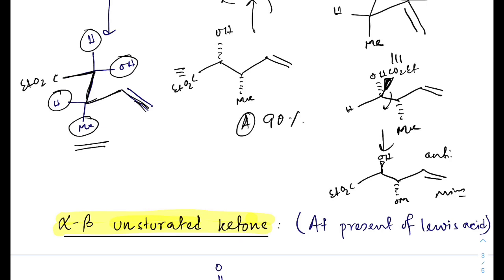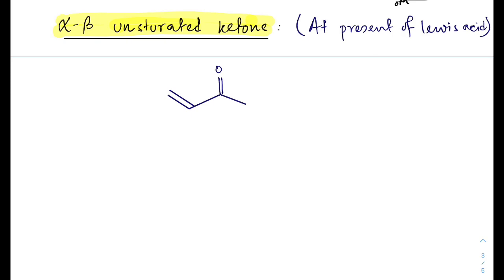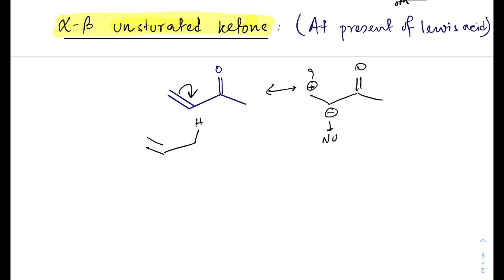This is also very important for CSIR NET and GATE exams. How does an alpha-beta unsaturated ketone act as an enophile in the ene reaction? If we draw the resonance structure, this position is positive and this position is negative, so there is an electrophilic center and a nucleophilic center. In the presence of the ene, the negative position takes the hydrogen, the bond falls back, and the bond attacks the electrophilic center — through a previous-type transition state it gives this product.